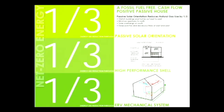To make a net zero energy project — or even better, a plus energy project — you've first got to radically reduce the energy loads and demands the building is making. In this project, about a third of that reduction comes from good basic passive solar design: form, orientation, organization, and placement of windows. About a third comes from the technology of a tightly well-built envelope. And about another third comes from highly efficient mechanical systems that also use heat recovery ventilation.